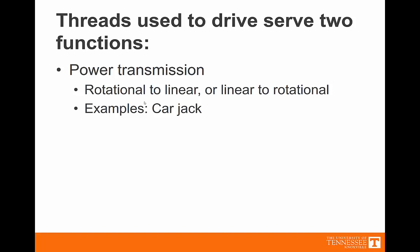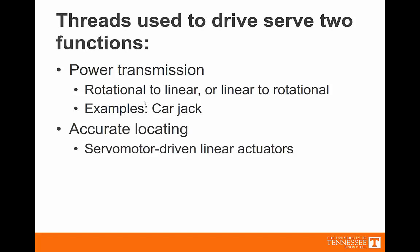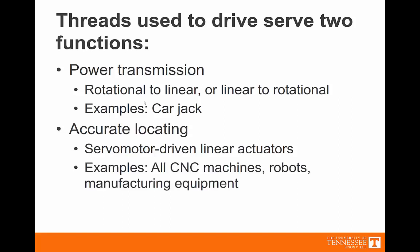The other thing that you might would be doing, besides power transmission, would be some sort of accurate locating. This is very often done with servo motors. So you have some sort of actuator that moves linearly as a motor is twisted. Almost all CNC machines use these sort of power threads as their working mechanisms for causing accurate location. We also use it a lot with robotics and in a great deal of the manufacturing equipment.